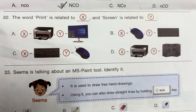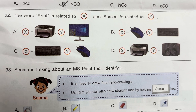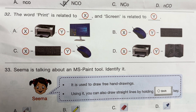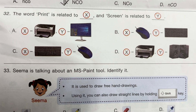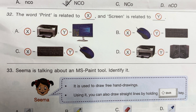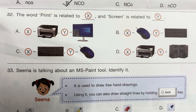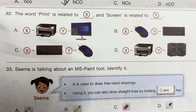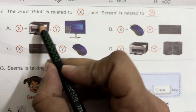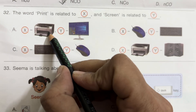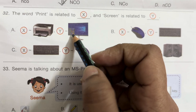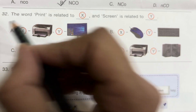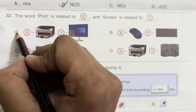Question 32: The word 'print' is related to X and 'screen' is related to Y. X is printer and Y is monitor. Answer is A.